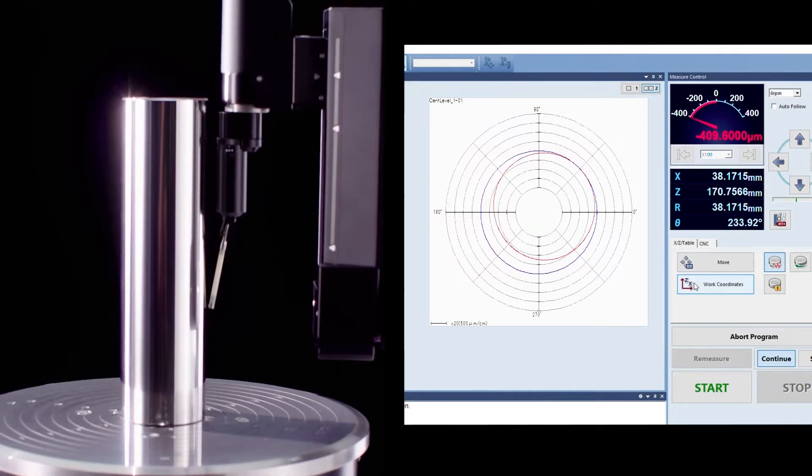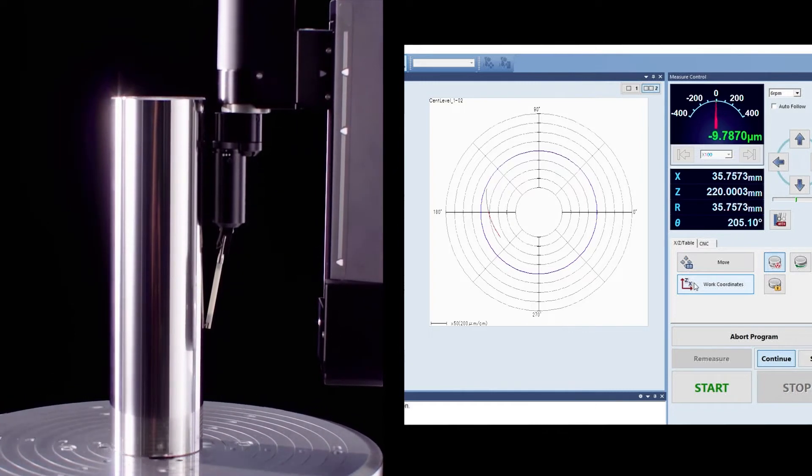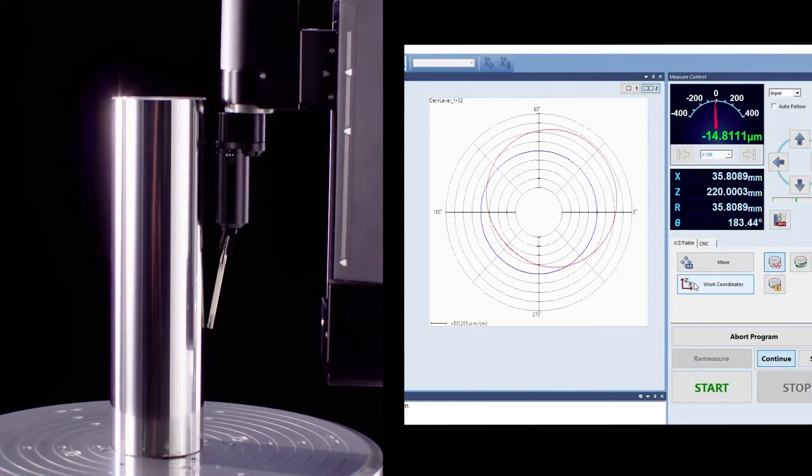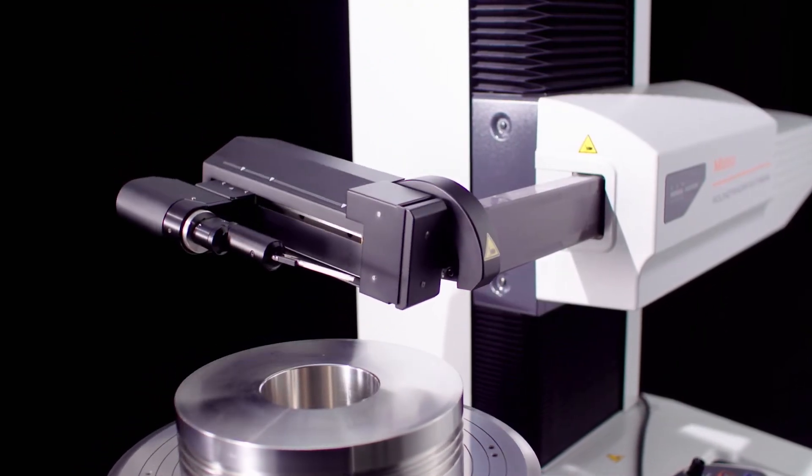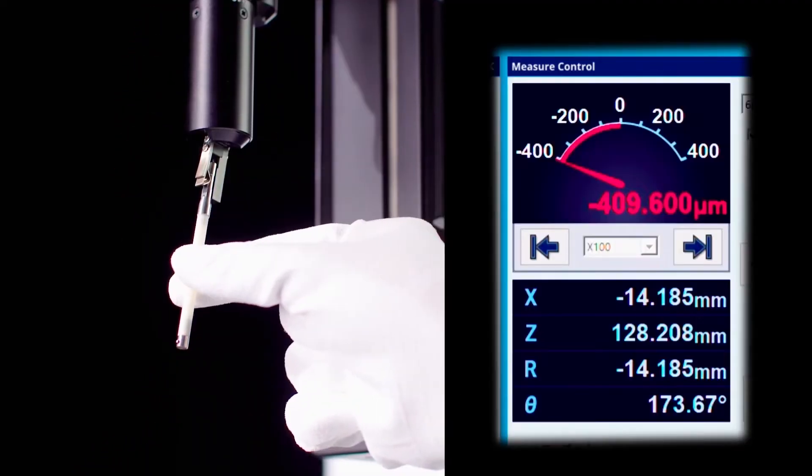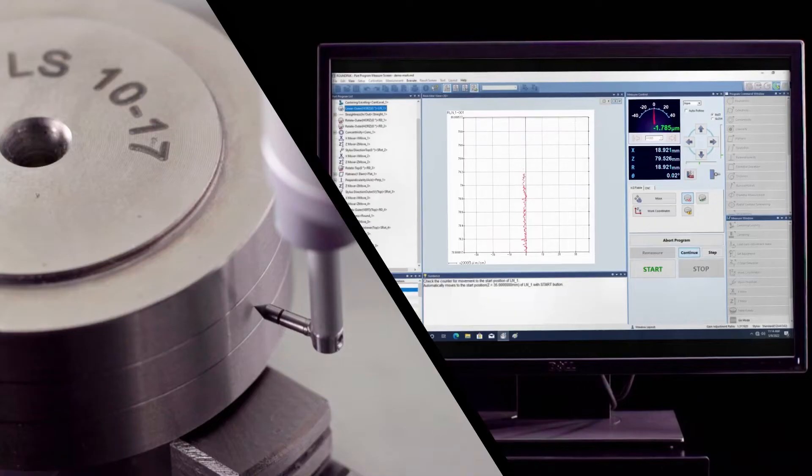Furthermore, it can also be programmed to perform continuous automatic measurement such as squareness and run out by combining inside diameter and upper surface measurements by changing the detector and its holder orientation. An added function in the software automatically detects a change in the stylus angle and recognizes it.